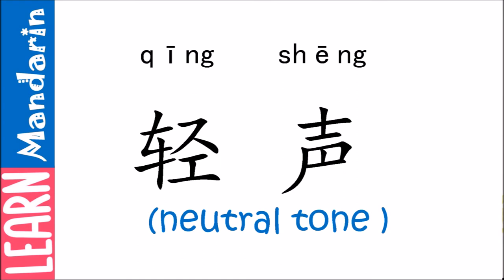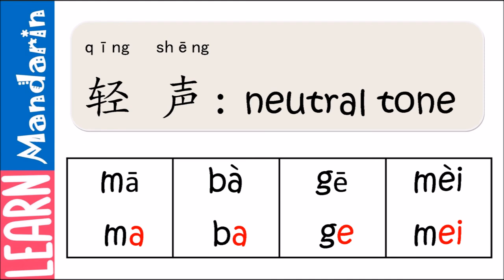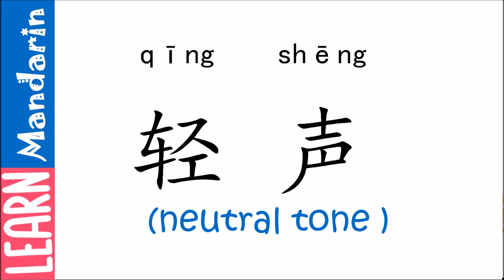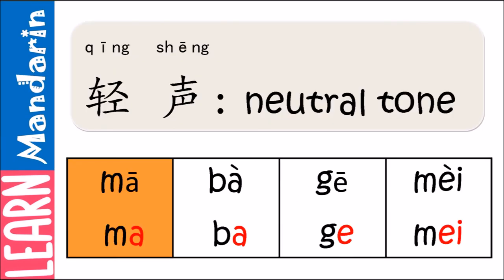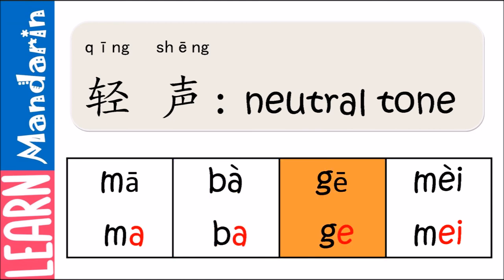The last one is the neutral tone, or 轻声. The neutral tone doesn't have any tone mark. This tone doesn't have a defined pitch, so you can read the syllable quickly without regard to pitch. Let's try it out: 妈妈, 爸爸, 哥哥, 妹妹. Nice try!